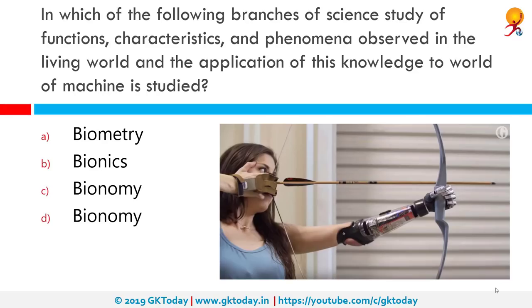In which branch of science is the study of functions, characteristics, and phenomena observed in the living world and the application of this knowledge to machine design studied? The correct answer is Bionics. Bionics, or biologically inspired engineering, is the application of biological methods and systems found in nature to engineering systems and modern technology. The word was first coined by Jack E. Steele in August 1958 as a portmanteau of biology and electronics.